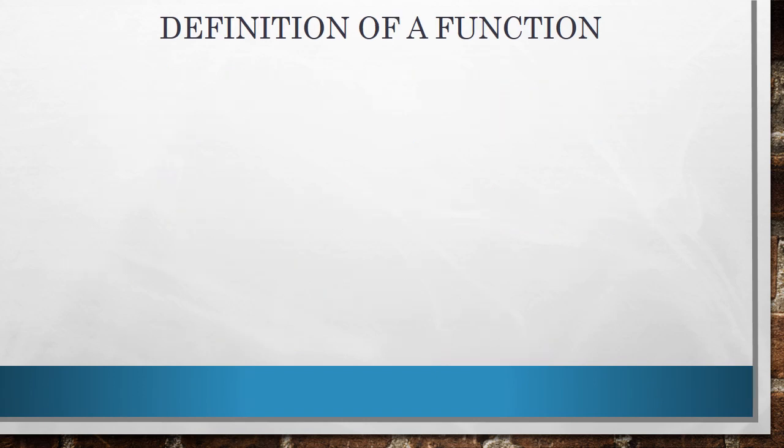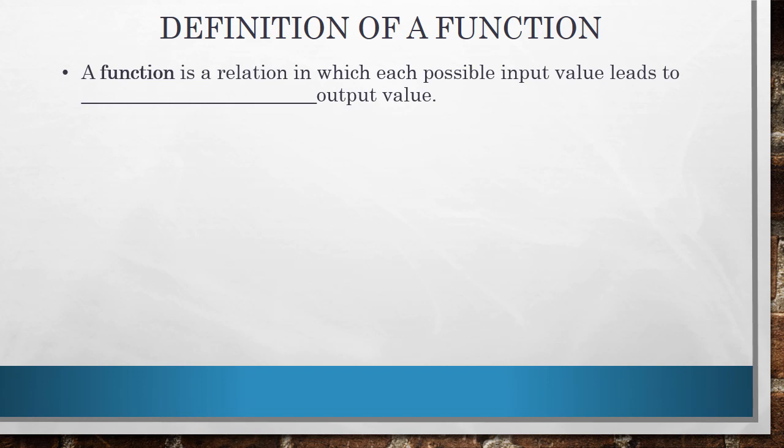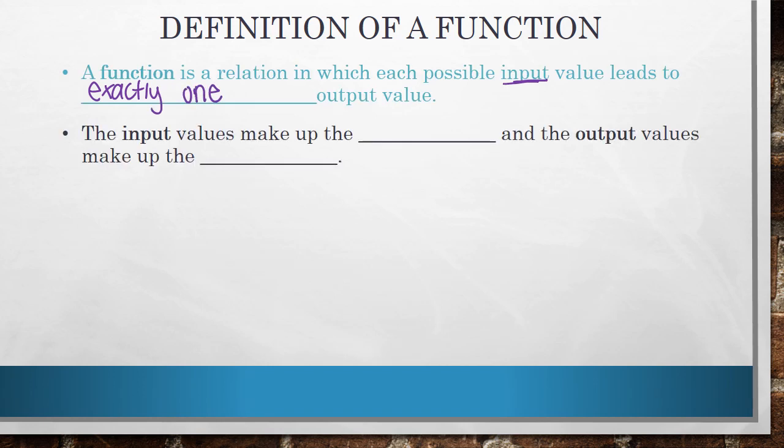Now that we've reviewed what a relation is, we can go into the formal definition of a function. So a function is actually a special type of relation. And it's a relation in which each possible input value leads to exactly one output value. The input values make up the domain, and the output values make up the range.